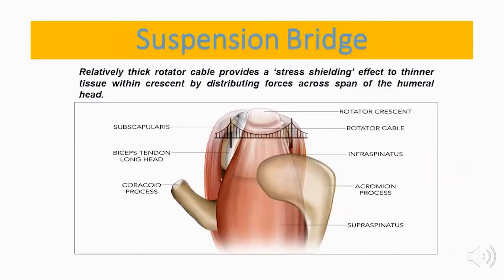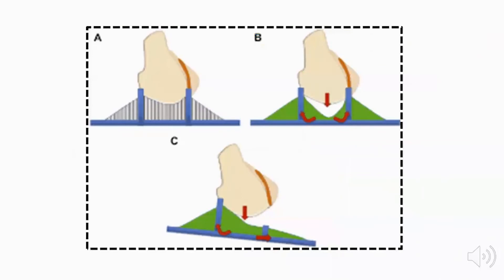The suspension bridge analogy describes how loads are transmitted through the thick rotator cuff cable, providing a stress-shielding effect on the thinner rotator cuff crescent. This occurs by distributing forces across the span of the humeral head, similar to how a suspension bridge transmits loads toward its two towers. If this mechanism is disrupted — as in rotator cuff tears — this leads to loss of the suspension mechanism and transmission to the two pillars anteriorly and posteriorly.